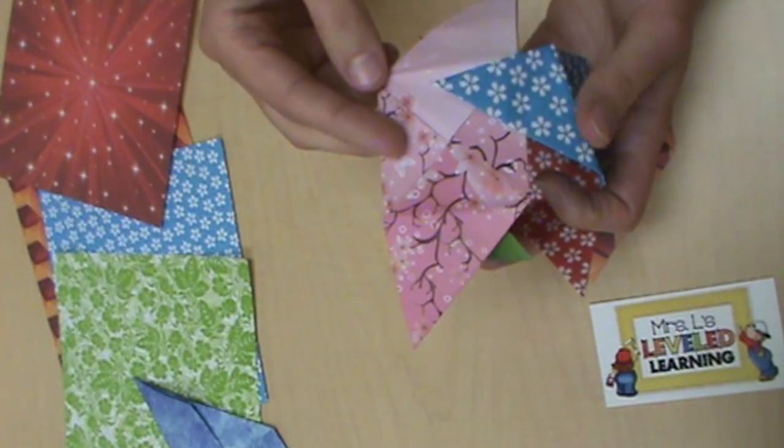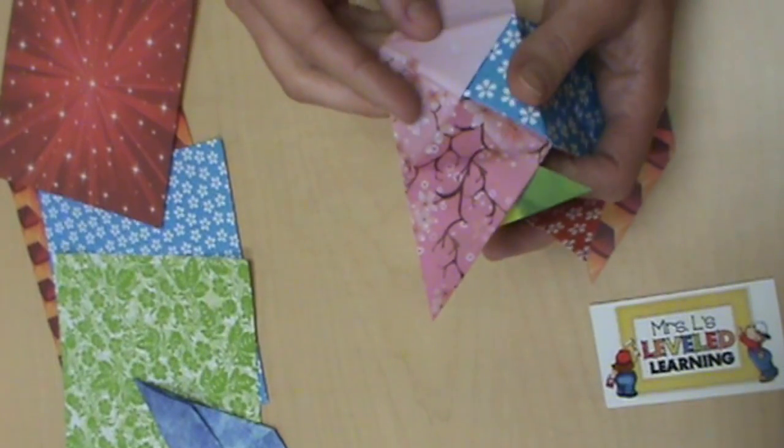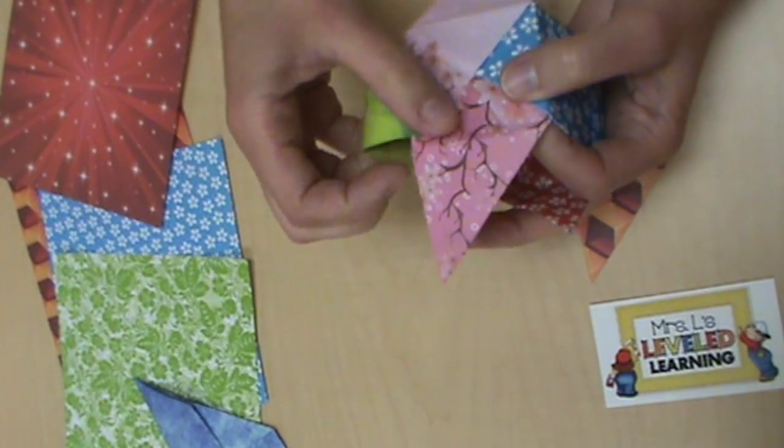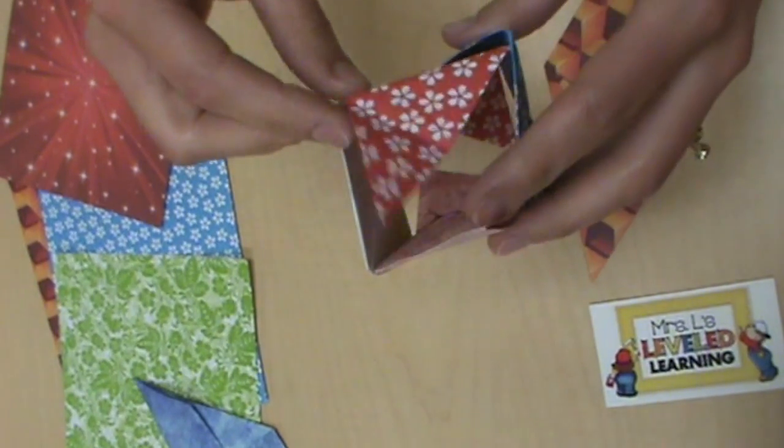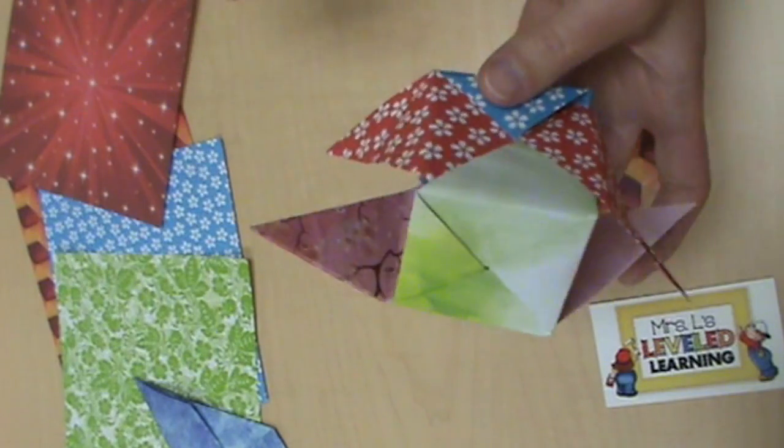It'll be a little confusing at first, so just keep turning the papers until it looks right. When you get your four faces, you should have two open sides on either end, like a top and a bottom.